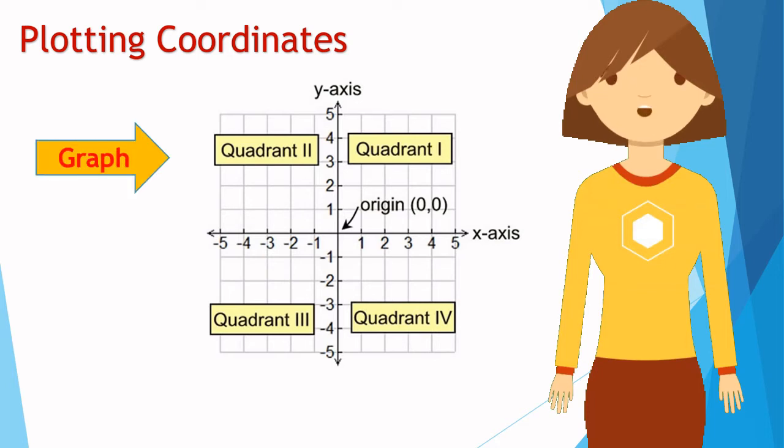This plane area is a graph. This is first quadrant. This is second quadrant. This is third quadrant. And this is fourth quadrant.